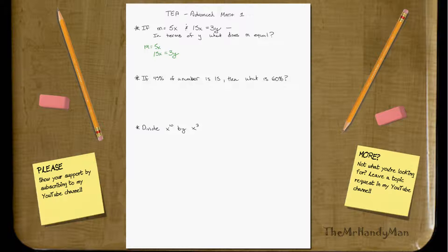Well, we can rewrite this as 3 times 5x equals 3y. And then you can substitute m in right here.